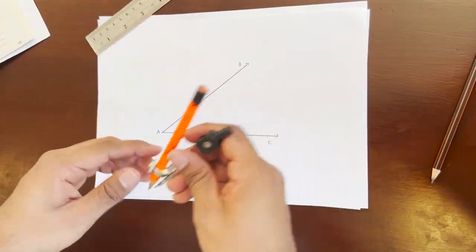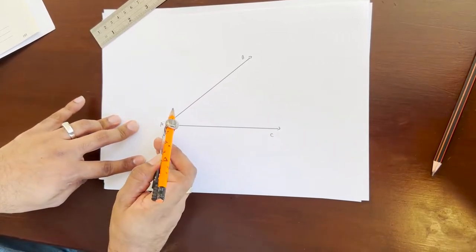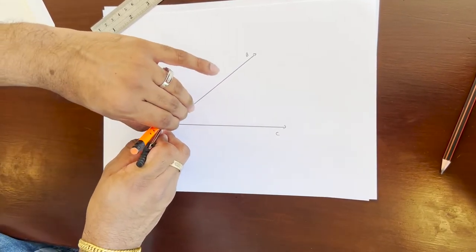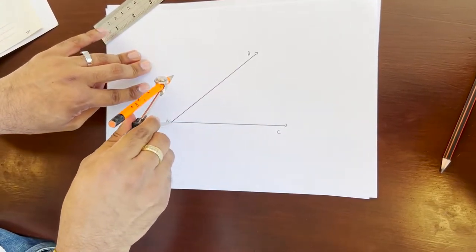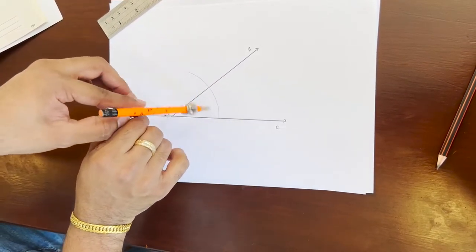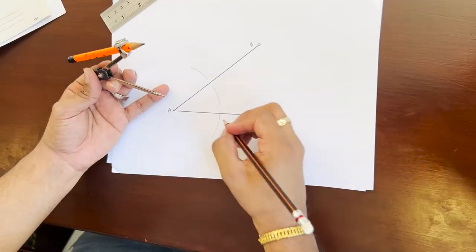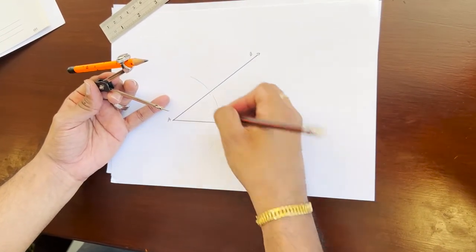Now in order for us to draw the angular bisector we're going to take the compass. We're going to keep it at point A and we are going to draw an arc that intersects the angle. I'm going to draw an arc right here. Now I'm going to name this whatever point you want, O and P.